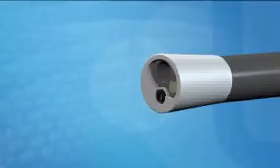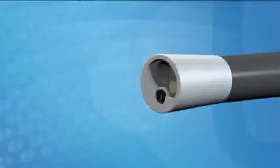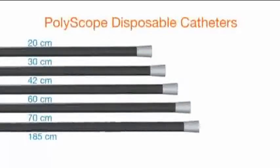The 8 French Polyscope offers a 1.2 millimeter working channel for use with common instruments and irrigation. Various lengths are available for a variety of urology and GI procedures.